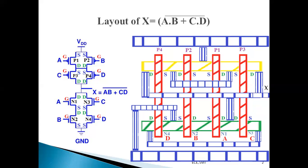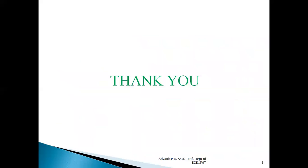After this, we have to establish contacts — that is very important. Whenever two different layers meet at a point and we need an electrical connection between them, we must use contacts. This is how we represent and draw the layout diagram for a given Boolean expression. I hope you have understood how to represent a layout diagram for a given Boolean expression. Thank you.